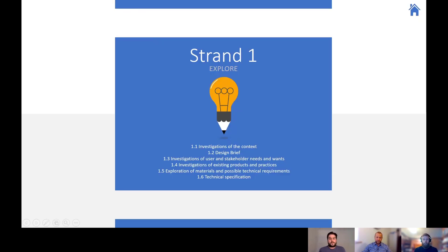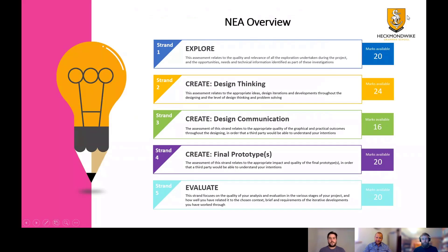We started on the 1st of June looking at the contextual challenges, exploring potential contexts. We then moved on to our design briefs — generating a really specific brief about what you'd like to undertake within this controlled assessment. Within that process we identified your target user, someone you should have good access to, to find out how their needs and wants relate to the context. We then completed product analysis, comparing at least four different products, before doing a product disassembly — taking one product apart in real detail to find out everything about the design, materials, and manufacturing.